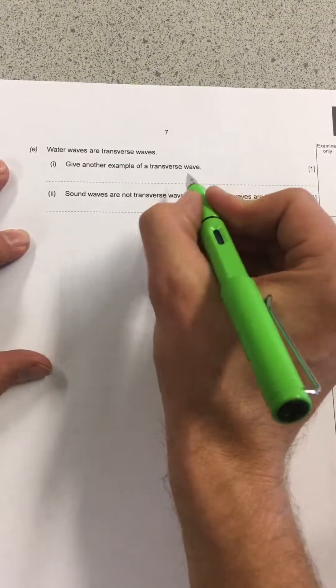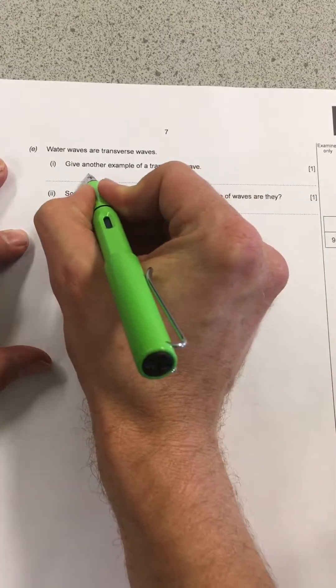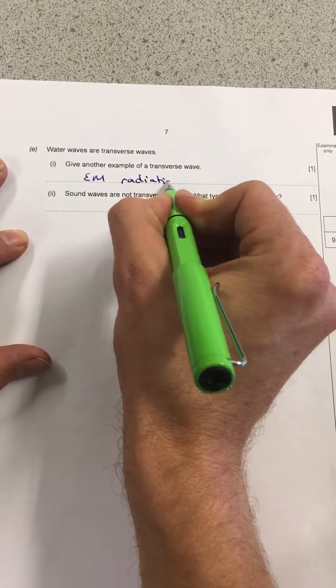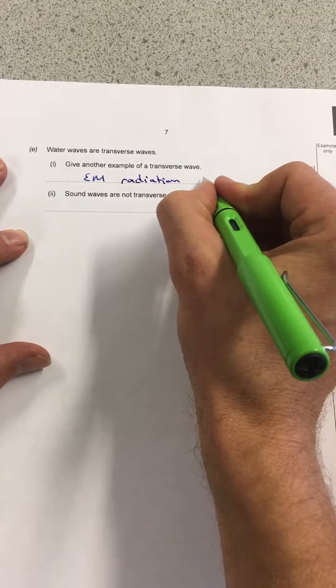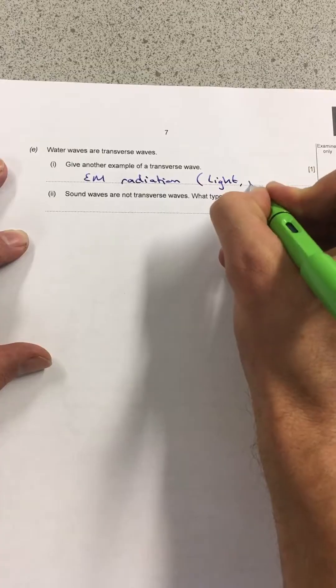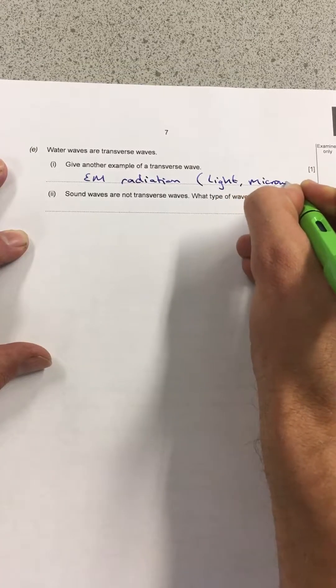I'm just going to flip over for the rest of the question. And it says this time water waves are transverse waves. Give another example of a transverse wave. Well, I'm going to choose EM radiation. You don't have to. You could be more specific. You could name one. So you could say light, or you could maybe say microwaves, or any of those.